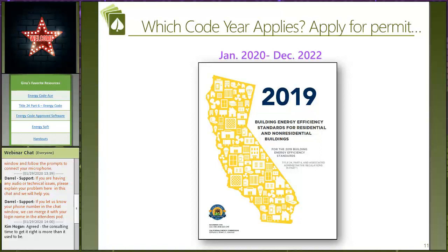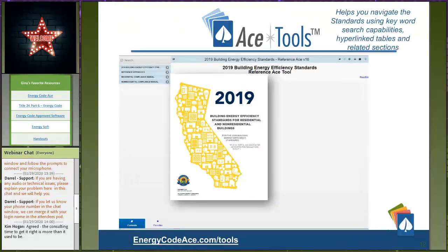People often ask, 'what were they thinking when they put that into this code cycle?' The answer: there was a public comment period on the 2019 code cycle development. Now is your opportunity to get involved and push for changes in the 2022 code cycle. The 2013 code cycle changed Gina's life — getting involved in code development since then has changed how she looks at life and her projects. Multi-family is going to see a big change under the next code cycle.